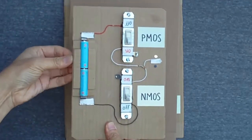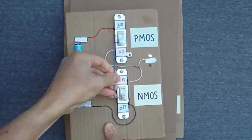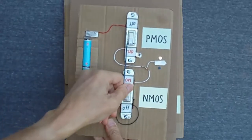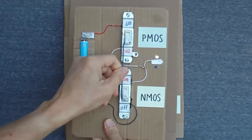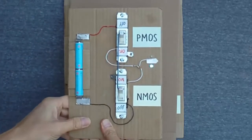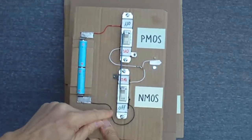Now, when I apply a low voltage or logic zero to the input, the output is high or logic one. Conversely, when I apply high voltage or logic one, the output is low or logic zero.